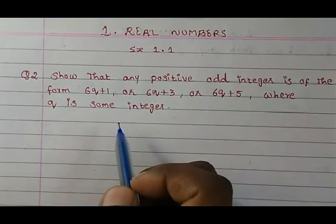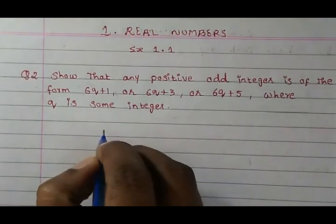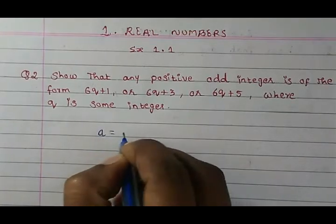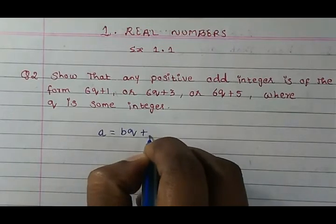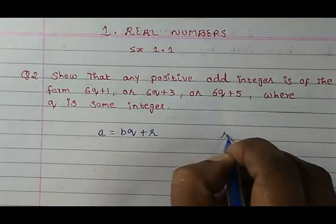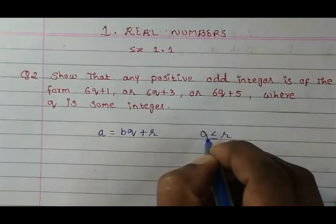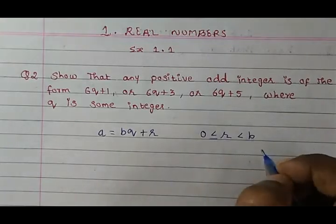First let us write down the Euclid's division lemma equation. That's a = bq + r where r will be greater than or equal to zero but less than the divisor.